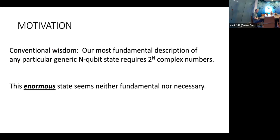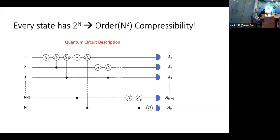The motivation is that quantum states are crazy big. You get even just a mere thousand spin states together and you're talking about something that requires more complex numbers than particles in the universe to describe — doesn't seem particularly fundamental. But it's not really necessary either, because we can describe every possible quantum state of n qubits in the quantum circuit formalism. We need order n numbers on the way in, and we need order n-squared gates, and we've just compressed this giant crazy quantum state down to order n-squared.